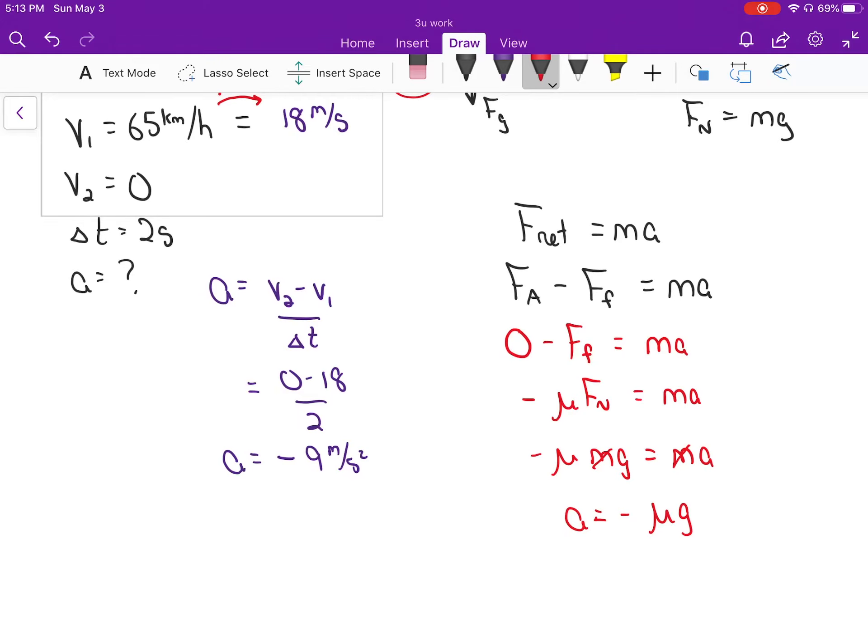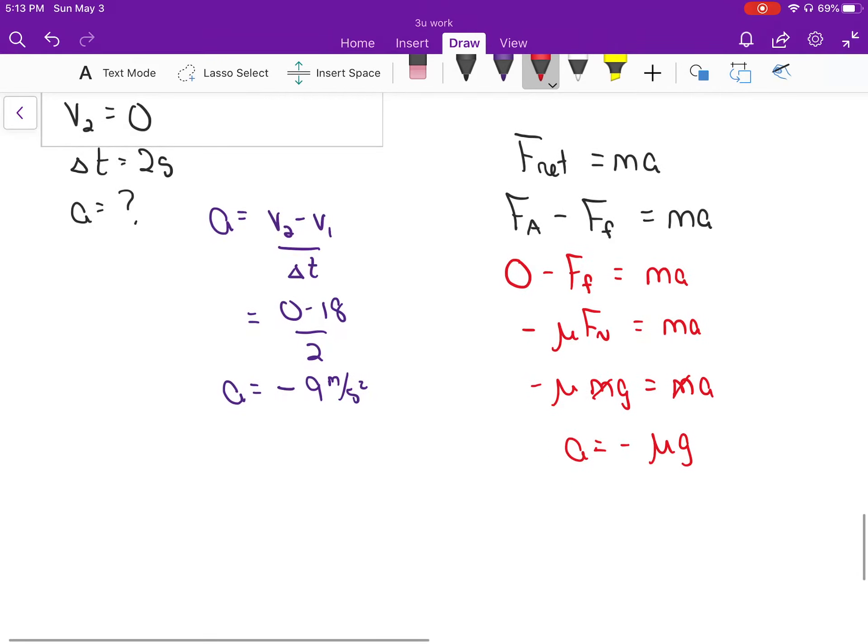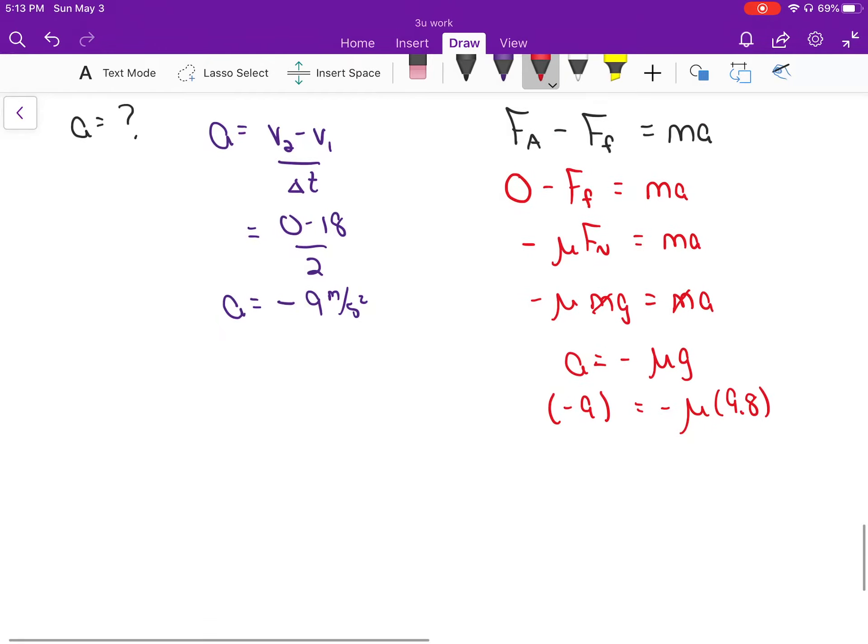In this particular case, we don't know the μ but we do know the a, so we can solve for the μ. The car is accelerating at negative 9, so that's equal to negative μ multiplied by 9.8.